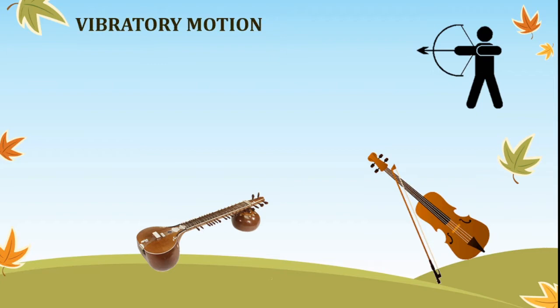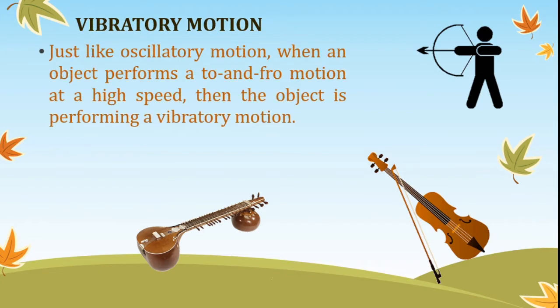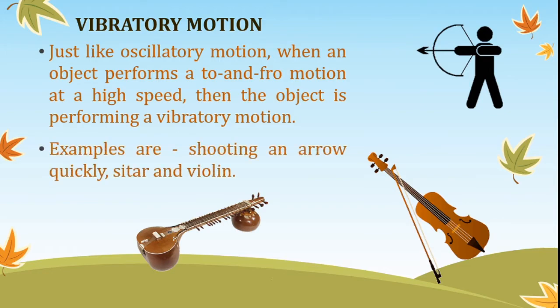Vibratory motion. Like oscillatory motion, an object performing a quick to-and-fro motion is called vibratory motion. The string movements of a sitar, violin, or guitar are best examples of vibratory motion.